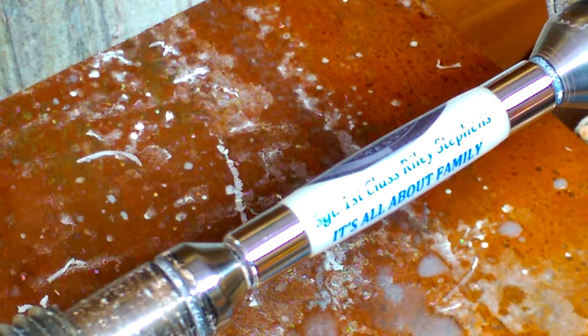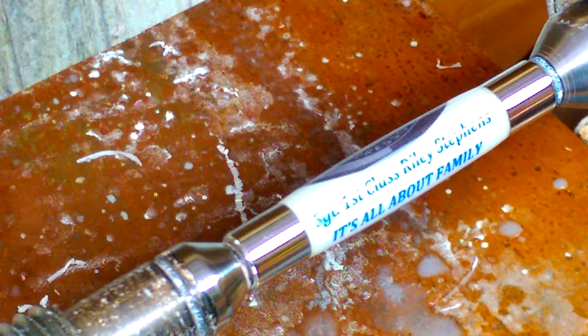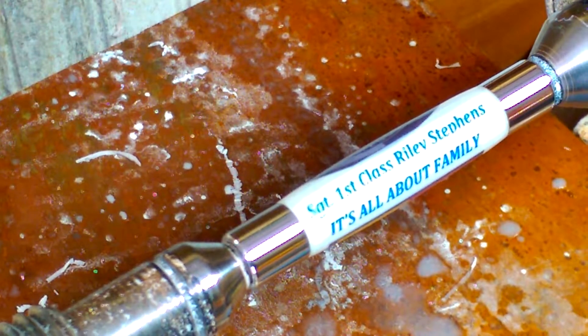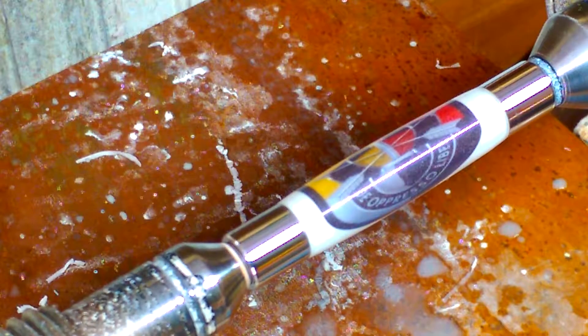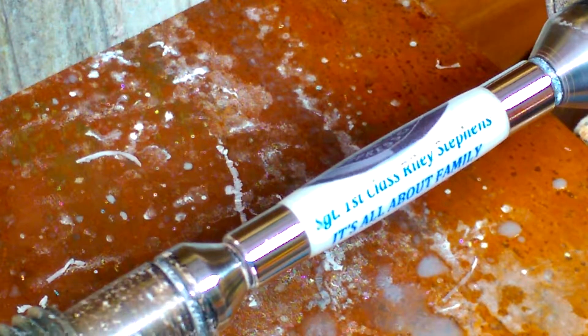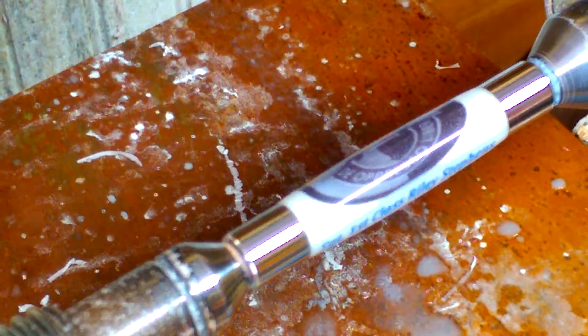That's 6,000 grit sandpaper right there. And I'm going to take it two more steps. I'll do an 8,000, 12,000. Then we'll polish it with that plastic headlight polish. Stay with me.